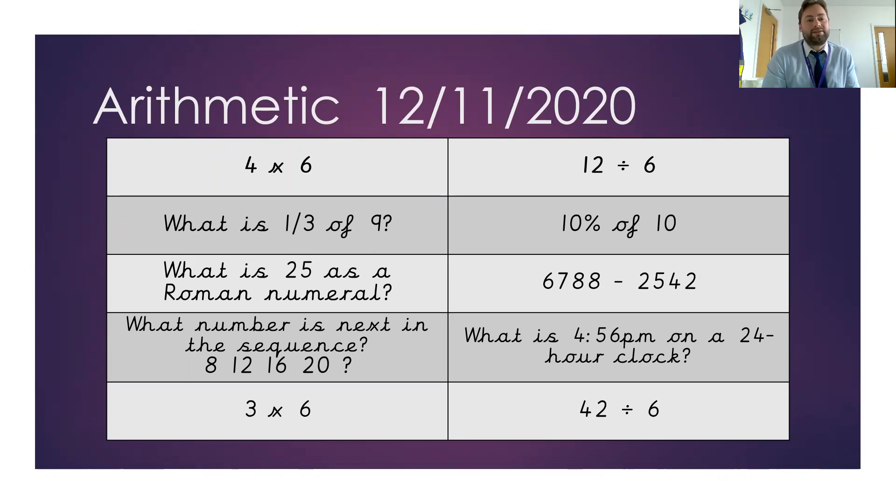For the 12th, we have 4 times 6. What is a third of 9? What is 25 as a Roman numeral? What number is next in the following sequence? What's 3 times 6? What's 12 divided by 6? 10% of 10. What is 6,788 take away 2,542? What is 4:56 PM on a 24 hour clock? So how would the numbers look on a 24 hour clock? And the last one is 42 divided by 6.